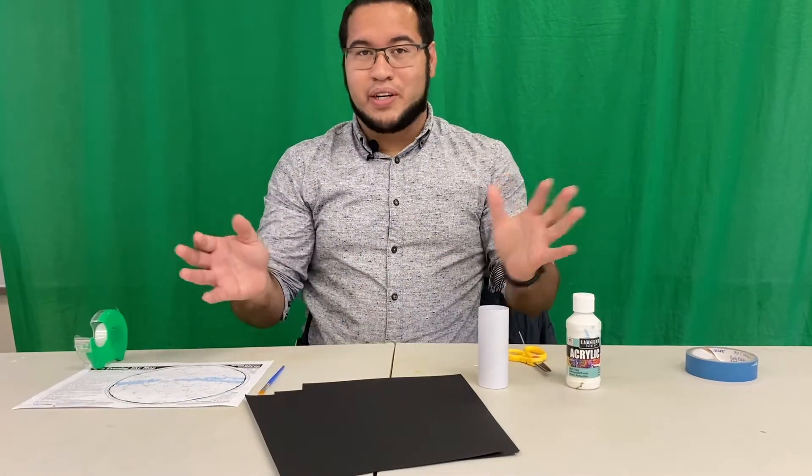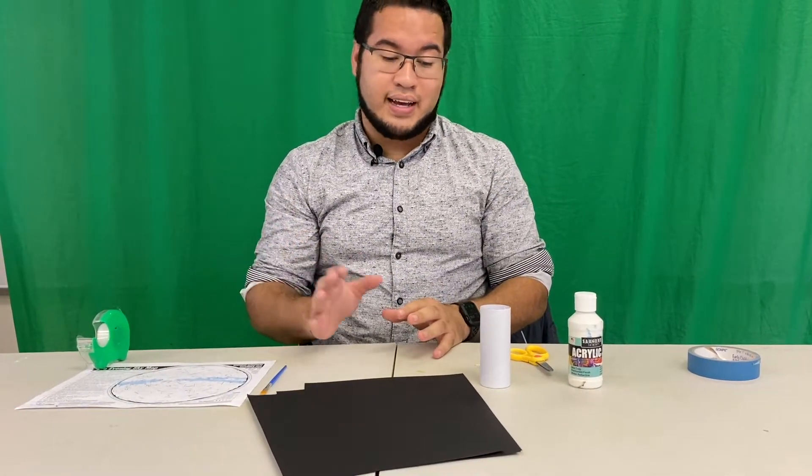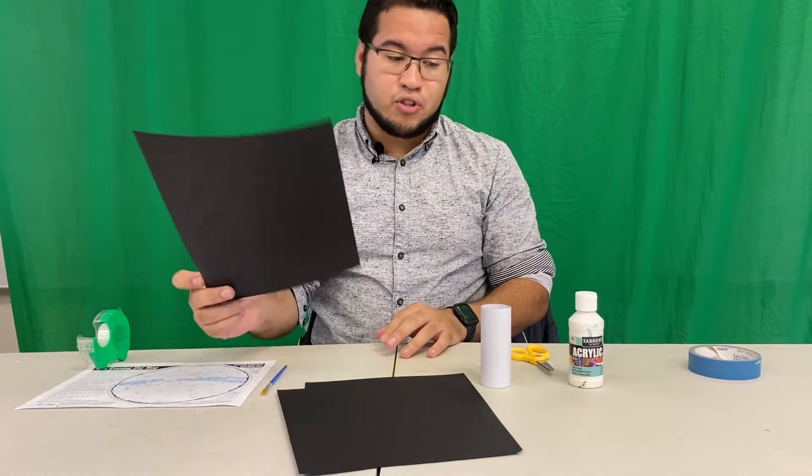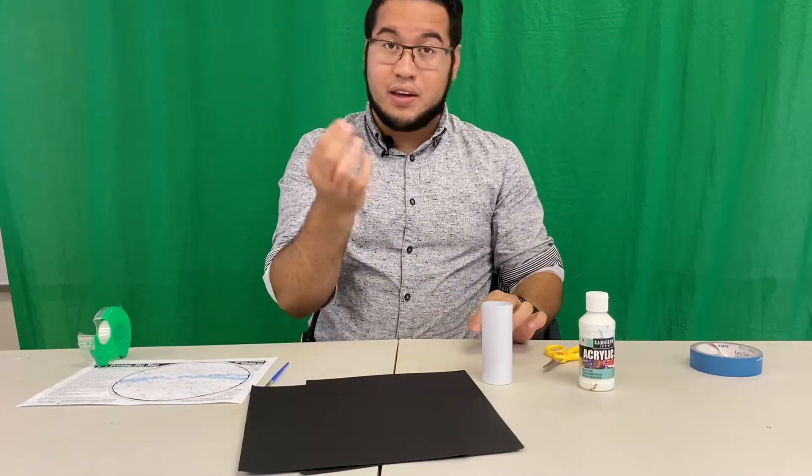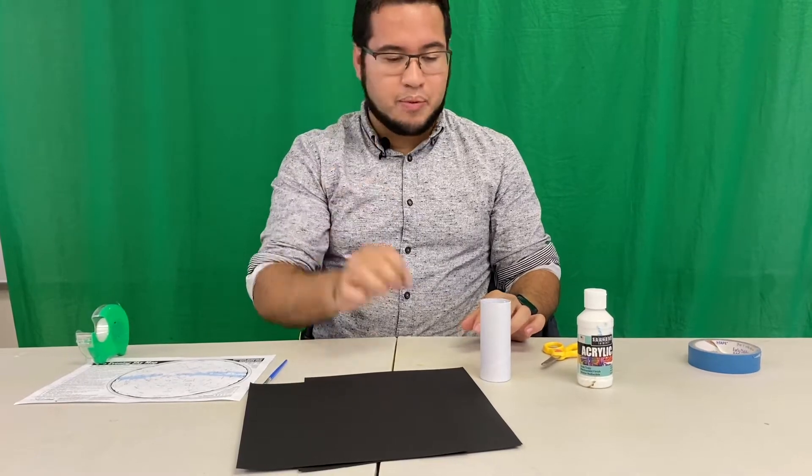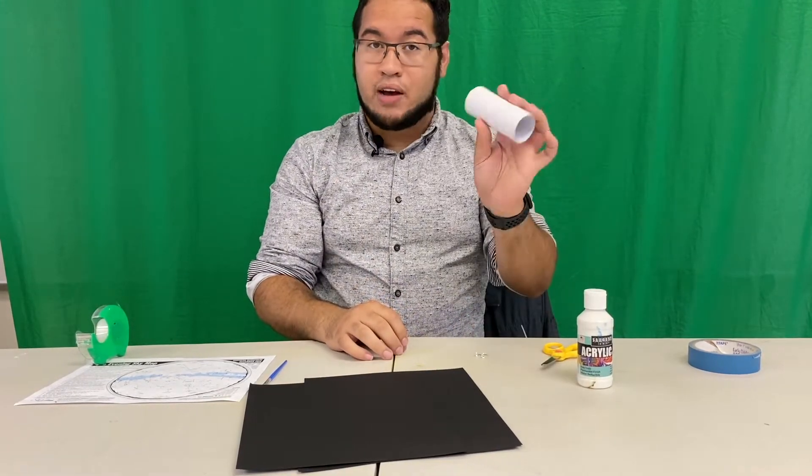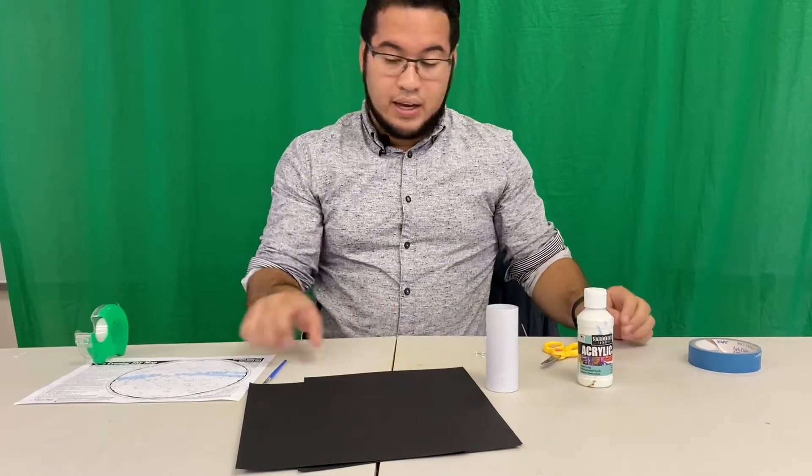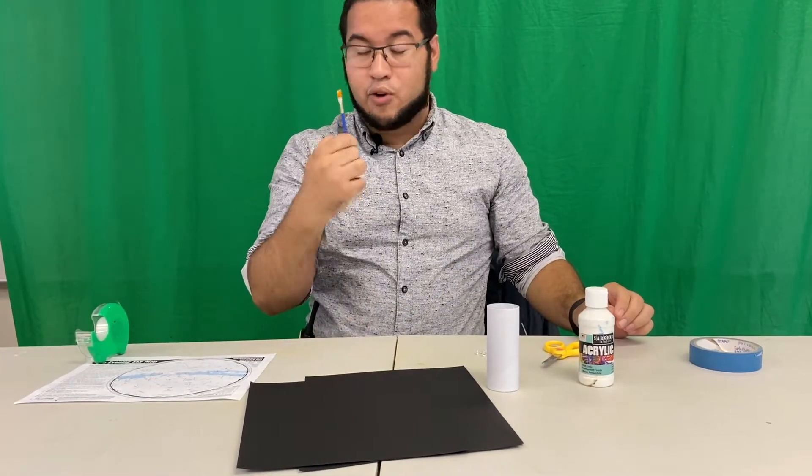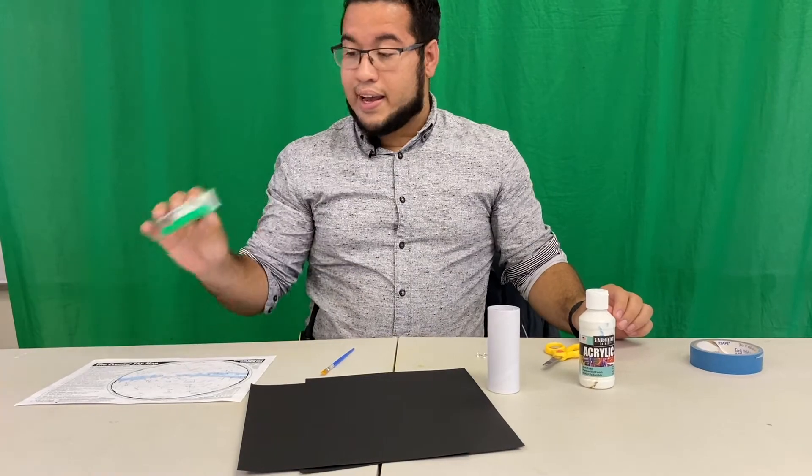Now to do this craft it's super easy. You can probably find all of these supplies at home. We just need some black construction paper, some white paint, some scissors, a thumbtack or another really pointy sharp object, a paper craft roll or a toilet paper roll or a paper towel roll, whatever you have at home, a little paintbrush or white crayon or marker, and some tape.